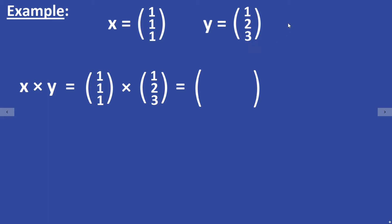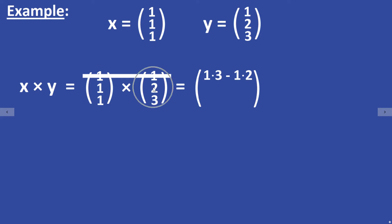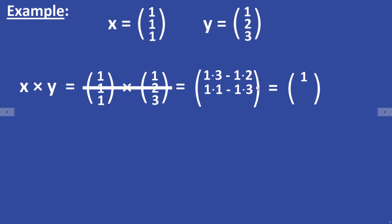For the first entry of the cross product, we ignore the first row and compute the determinant of this 2×2 submatrix. The first entry is equal to 1 times 3 minus 1 times 2, which equals 1. For the second entry we cross out the second row. The second entry is equal to minus the determinant of this 2×2 submatrix, so it equals 1 times 1 minus 1 times 3.